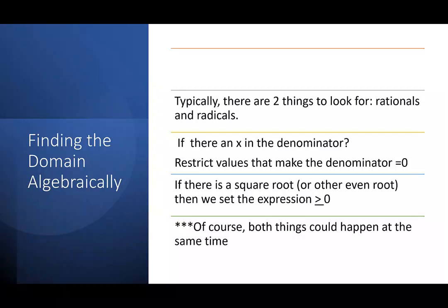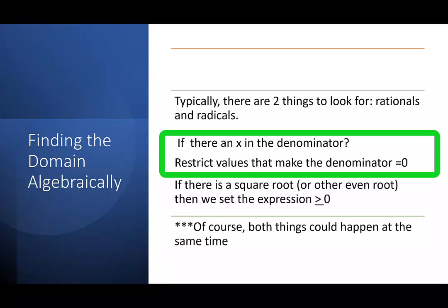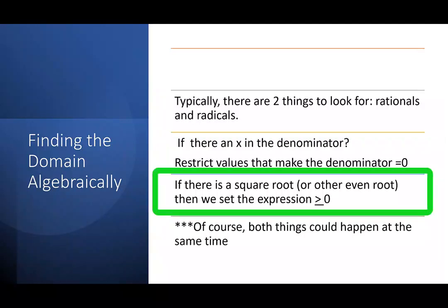Typically there are two things to look for: rationals and radicals. With rationals, you're looking for if there is an x in the denominator. If there is, we want to restrict any values that make the denominator equal to zero.